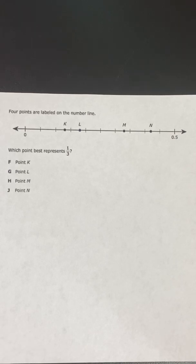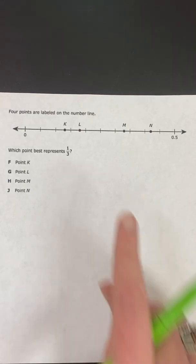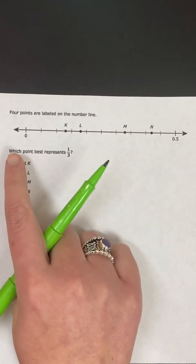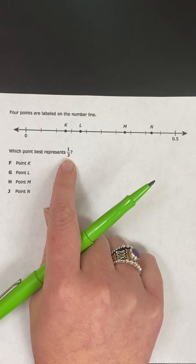Okay, so here's another one of our star questions that we're going to talk about in practice. This one says four points are labeled on the number line. So I have K, L, M, and N. And then it says which point best represents one third.